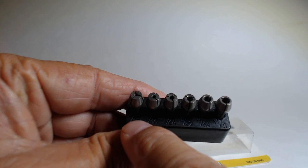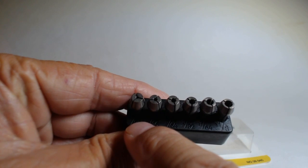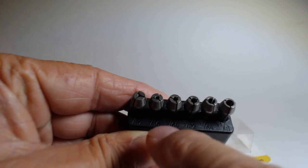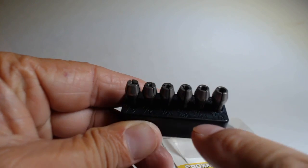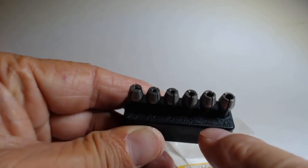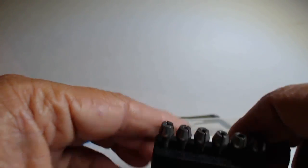Then on the bottom it gives you their imperial equivalent, so we have 1/32, 1/16, 5/64, 3/32, 7/64 and 1/8. And then it has its own holder.